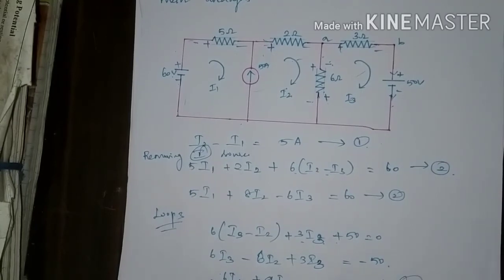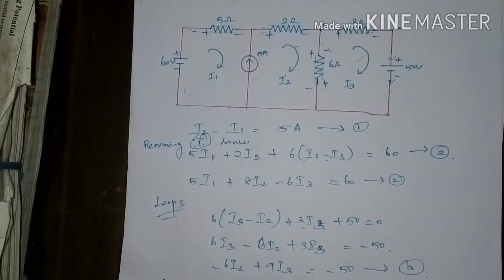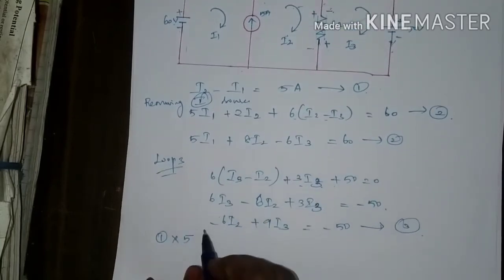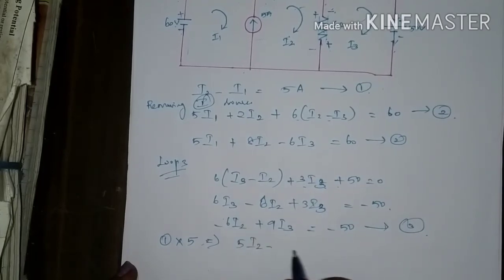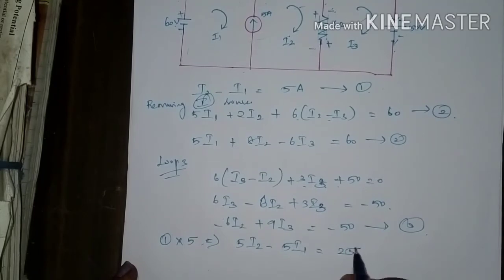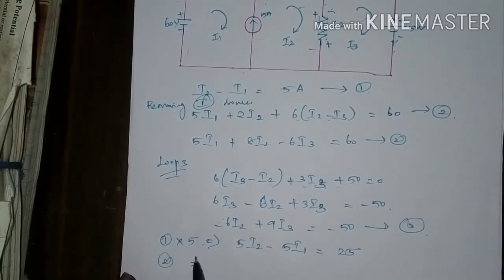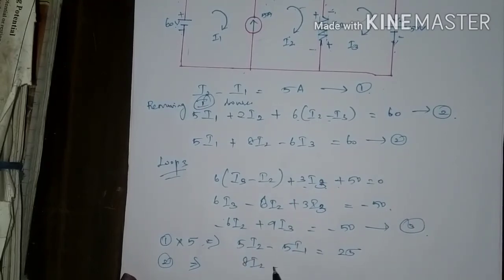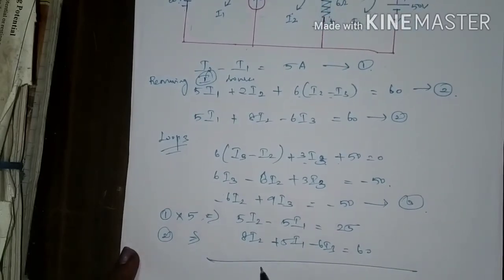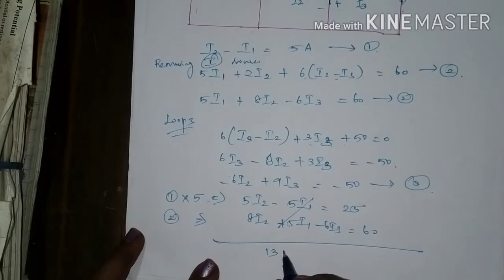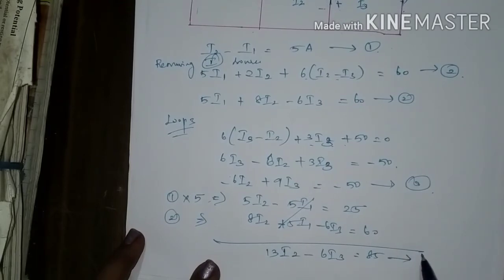After mathematical manipulation using equations 1, 2, and 3 — substituting and simplifying — I1 gets cancelled, and we obtain equation 4: 13I2 - 6I3 = 85.